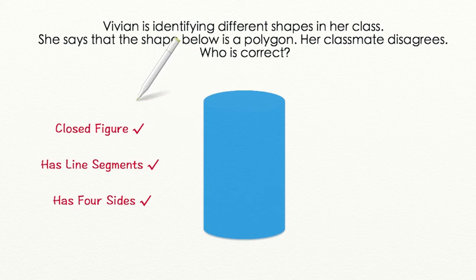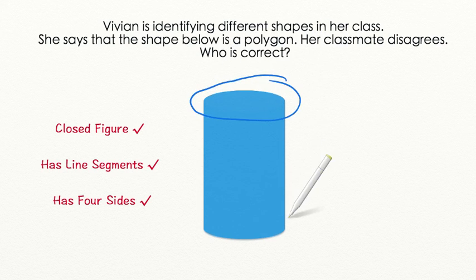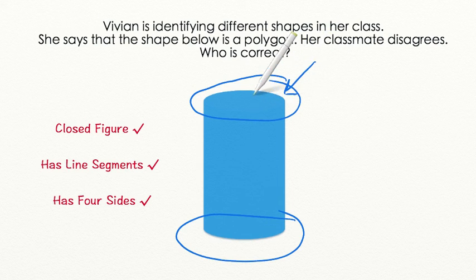Let's go through each step of the checklist. It is a closed figure. We don't have any open ends on this figure. It has line segments. Well, it has two line segments, but look! The top and the bottom of this shape are curved. Since these are curved, they aren't line segments. And that means that it can't be a polygon.